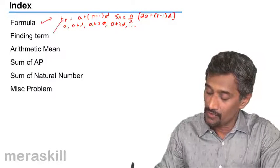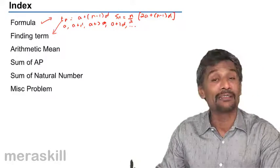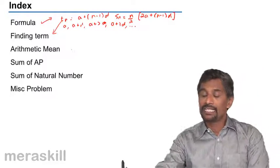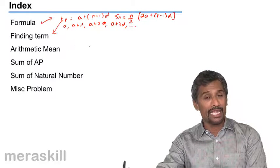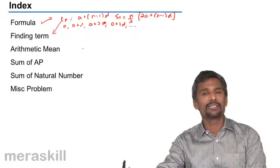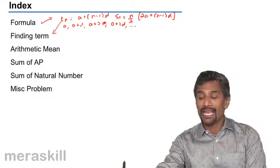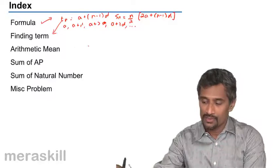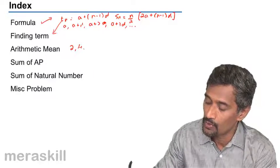Then for finding the term, we use this particular formula. Arithmetic mean: whenever three terms are in an AP, we say that the middle term is the arithmetic mean of the other two. For example, 2, 4, and 6.